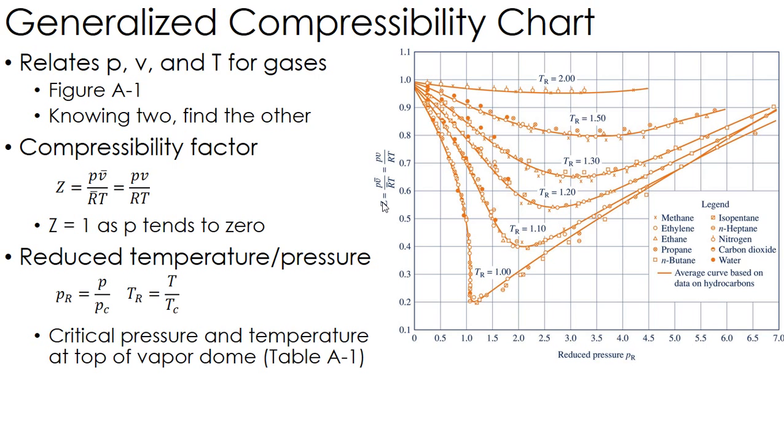As long as I know the critical pressure and critical temperature of that substance, I can use one single chart, which is why we do that. Now, on the chart that is not here, but the chart that we have in the back of the book, there's also what we call a pseudo-reduced specific volume, which you can actually calculate this way. And this is just a better approximation of what's actually going on than the volume divided by the critical volume.